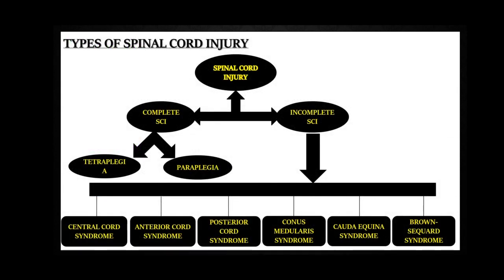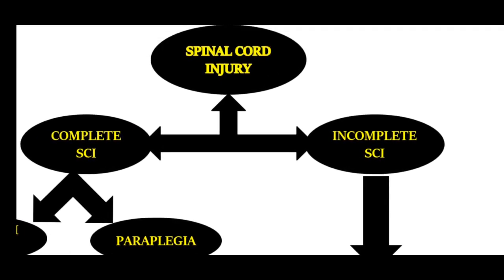Spinal cord injury can be divided into two types: complete spinal cord injury and incomplete spinal cord injury. Complete transaction of the spinal cord is very rare. A complete injury means there is no sensory or motor function in the lowest sacral segments — that is S4 and S5. The sensory and motor function at S4 and S5 can be determined by anal sensation and voluntary external anal sphincter contraction.